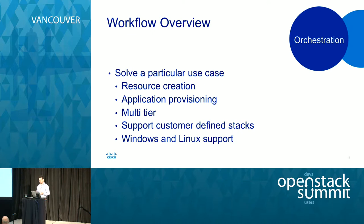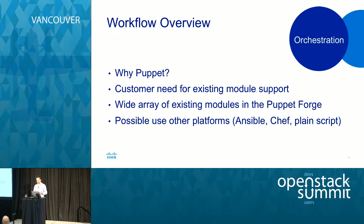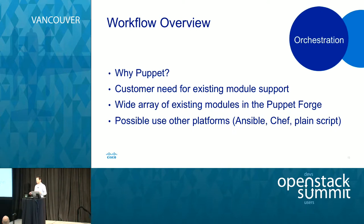Application provisioning needed to be based on a customer-driven event — a stack built by the customer out of components we provide out of the box or that they can create themselves. It needed to support multi-tier applications and customer-defined stacks, with Windows and Linux support. Why Puppet? Partially driven by customer demand — they had existing Puppet modules and workflows we needed to fit into. There's also a wide array of Puppet modules available in the Puppet Forge. However, using custom Heat resources means we're not tied to Puppet alone — it's possible to extend this to use Ansible, Chef, or even shell scripts.